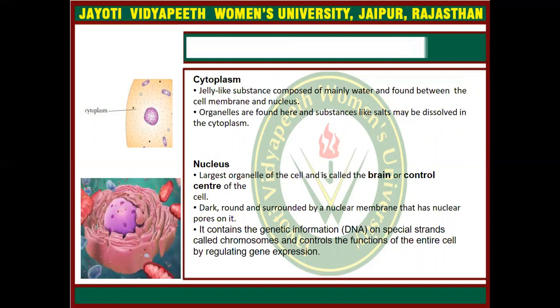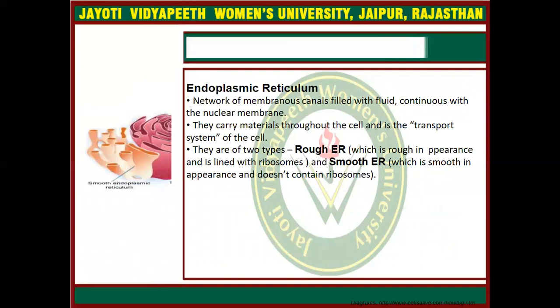The next organelle is the nucleus. The nucleus is the main organelle which differentiates between the prokaryote and the eukaryote. The nucleus is present in the central part of the cell and plays a central role in cellular functioning, because all proteins are produced using the replication, transcription, and translation process. It contains the DNA and the genetic information. The nucleus is surrounded by a nuclear membrane, which is very clear in the eukaryotes.